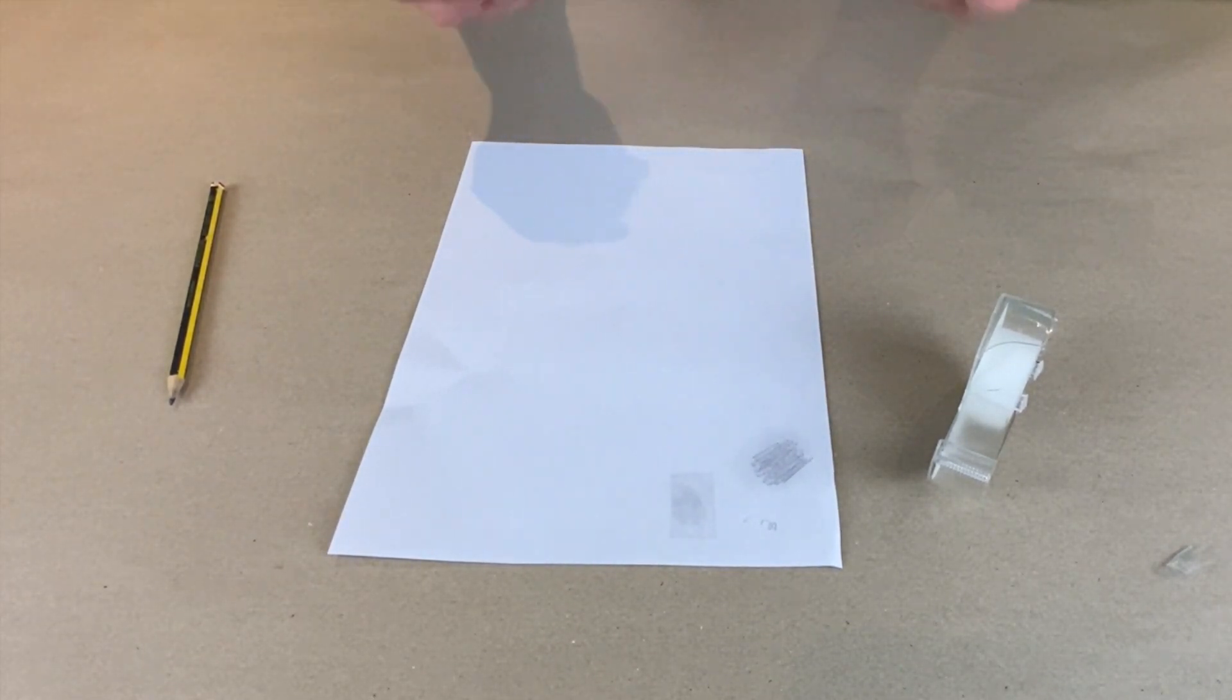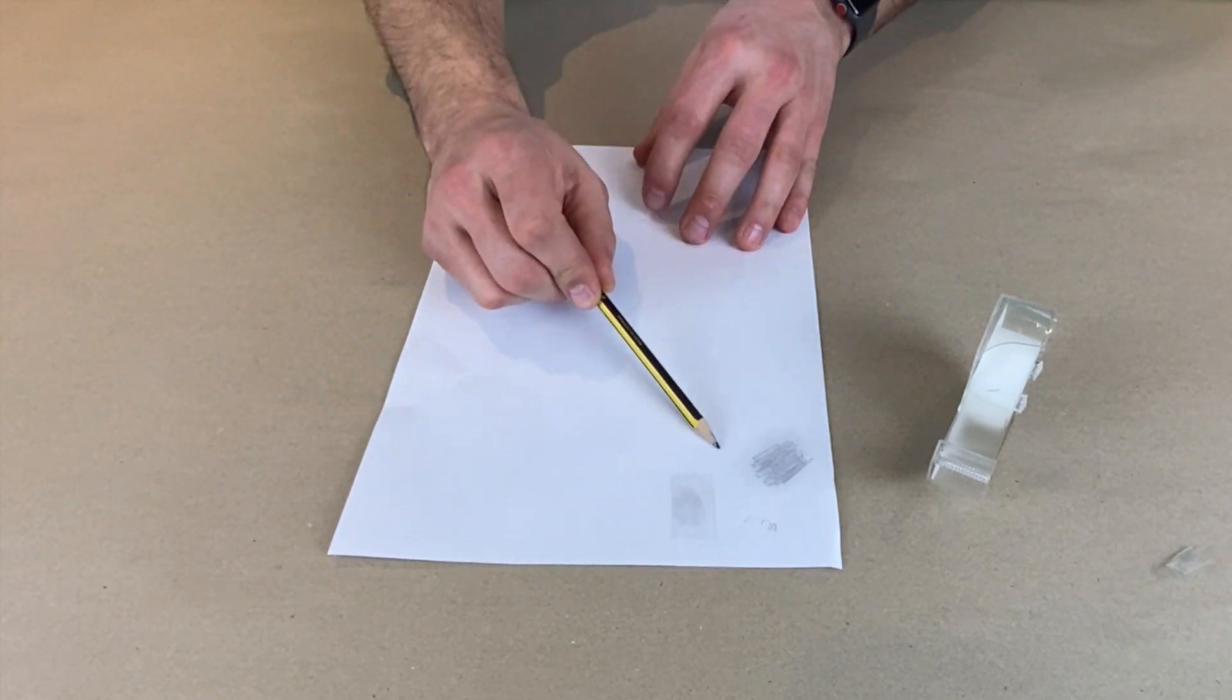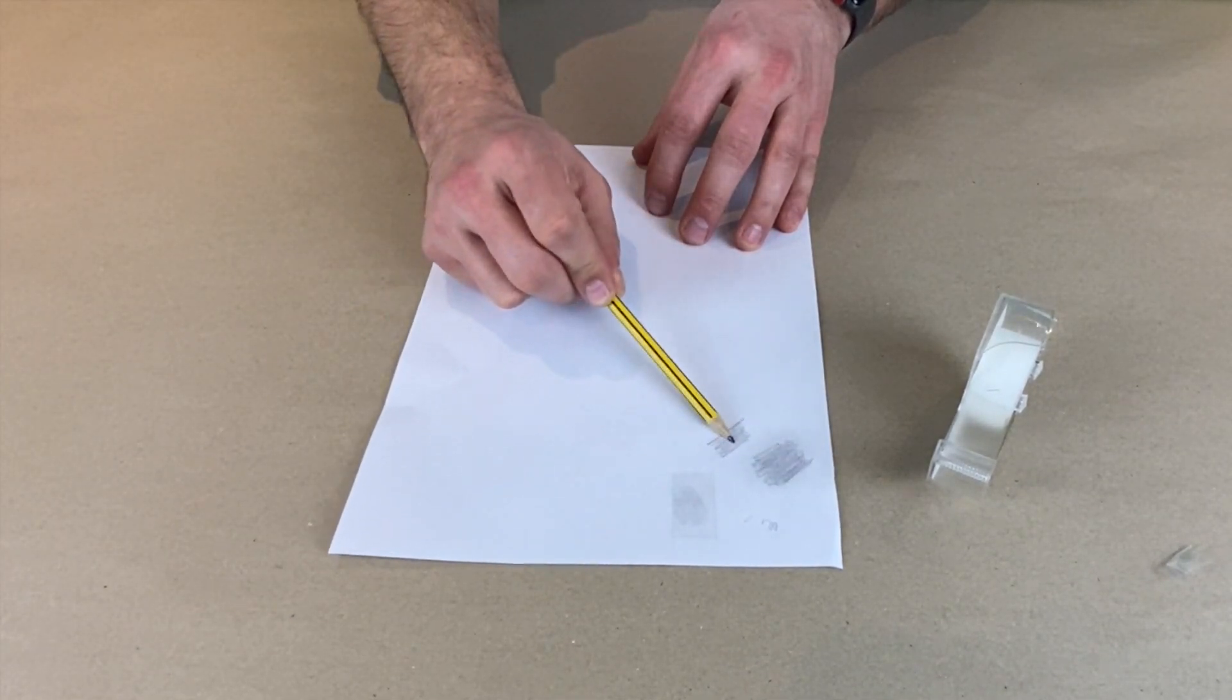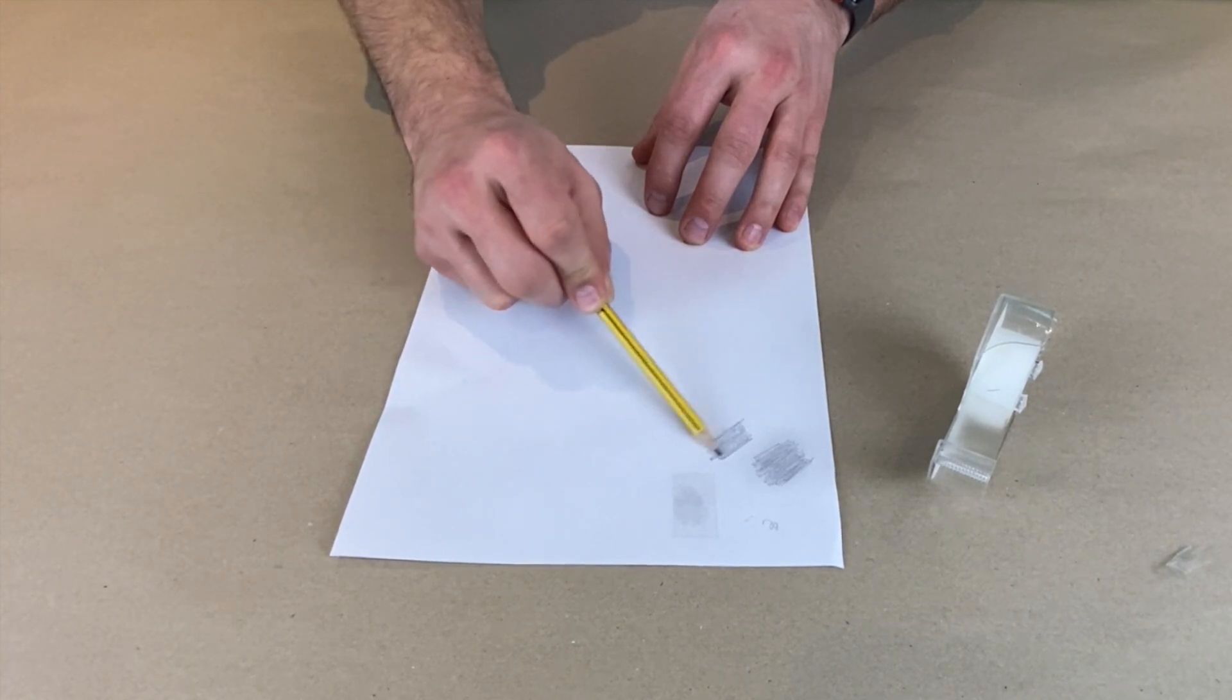You might want to have a practice with one or two before you do them all. But it's pretty much as simple as that. Colour in a little bit more. You could even do it over the top, I suppose. You don't need to do 10 different blotches.